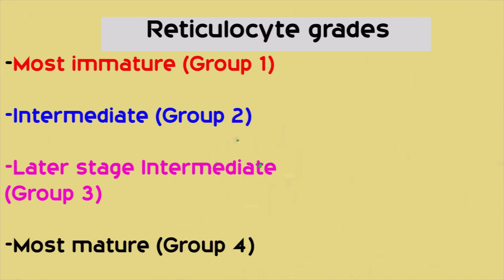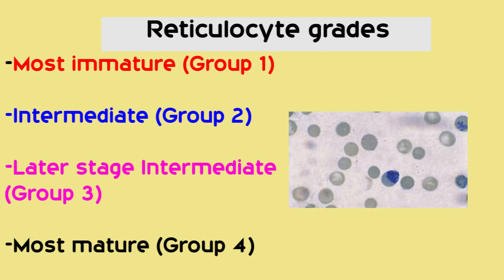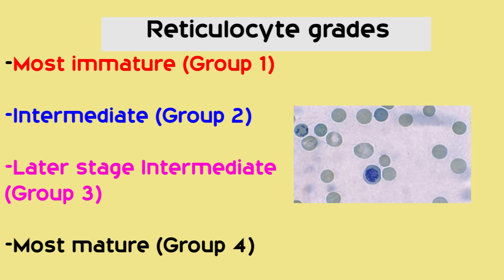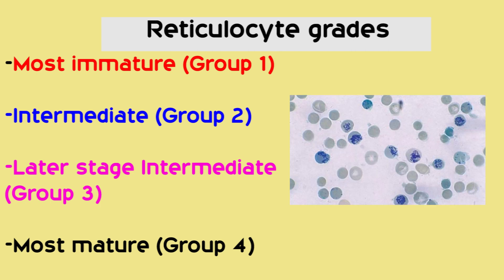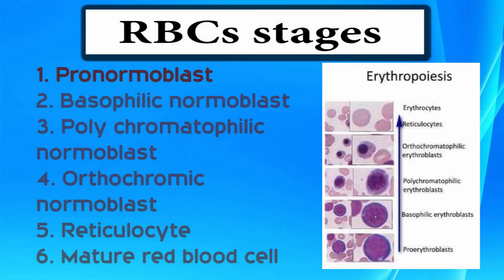Reticulocyte grades. There are four reticulocyte grades: most immature, intermediate, later stage intermediate, and most mature. The RBC developmental stages are: pronormoblast, basophilic normoblast, polychromatophilic normoblast, orthochromic normoblast, reticulocyte, and mature red blood cell.